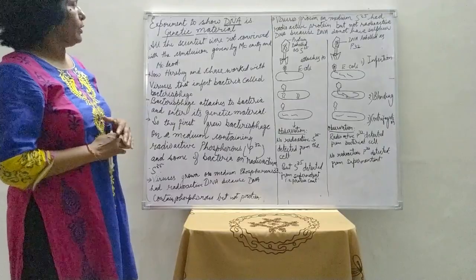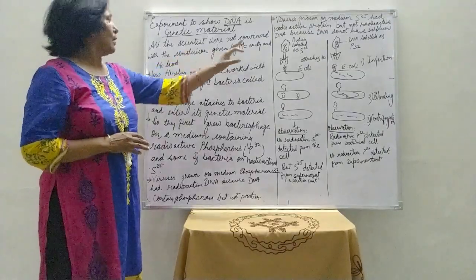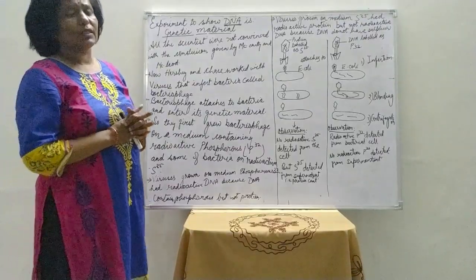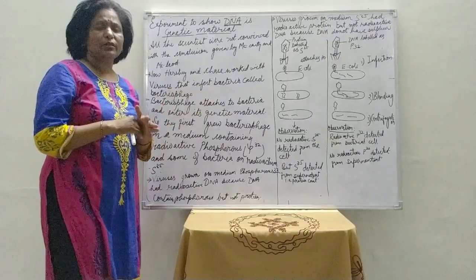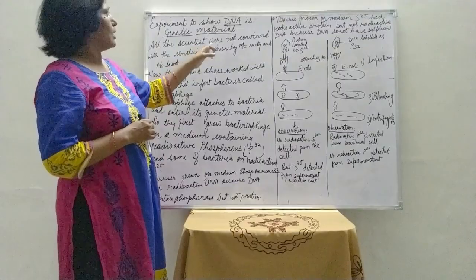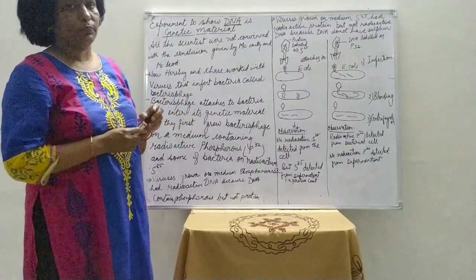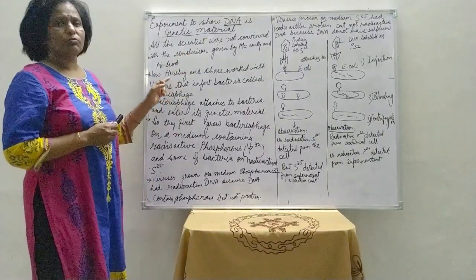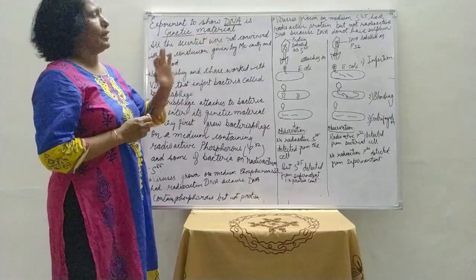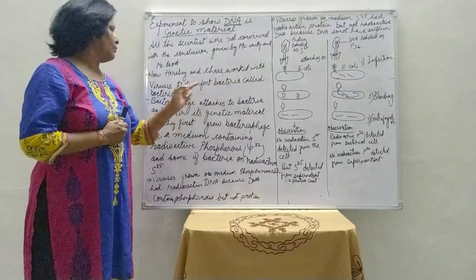They concluded on the basis of these experiments that only DNA is responsible to transfer the character from generation to generation — meaning DNA is the genetic material. However, not all scientists were convinced by McCarty and MacLeod's conclusion, so another scientist worked on this topic using viruses that infect bacteria, called bacteriophages.